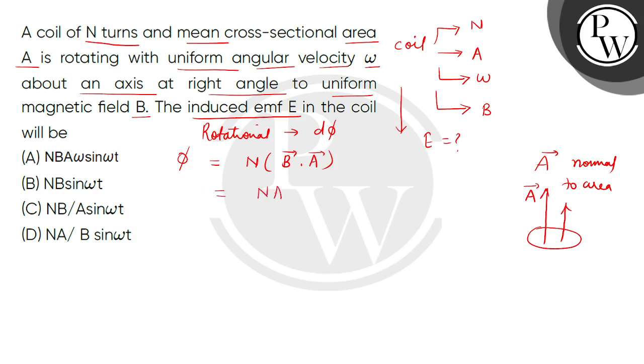We can write this as N·A·B·cos(theta). Now we can write theta as omega·t, where theta is the angle between area vector and magnetic field. So we get phi equals N·A·B·cos(omega·t), which is equation 1.